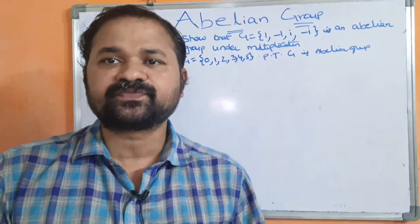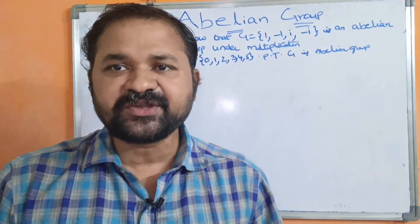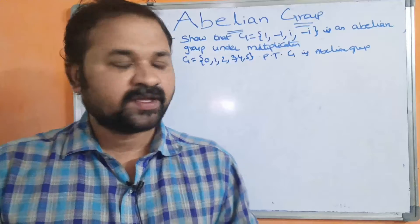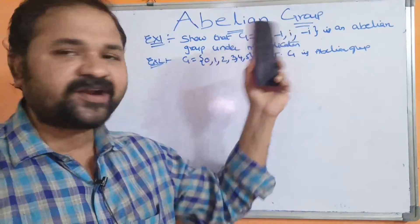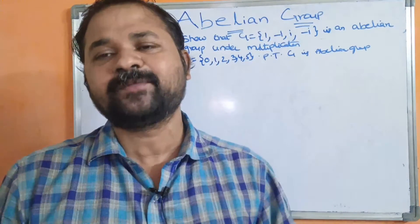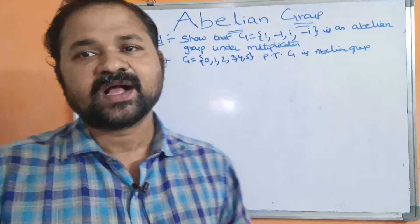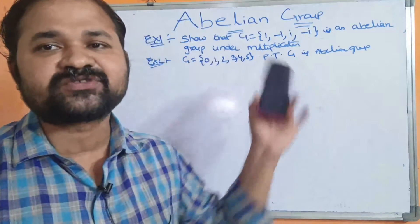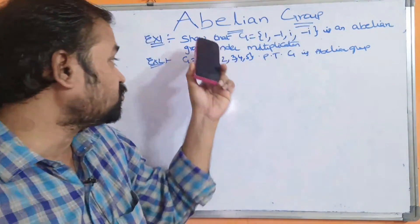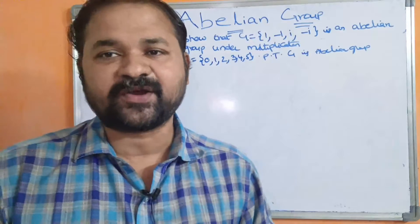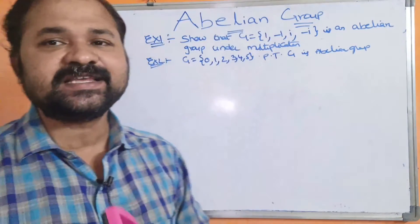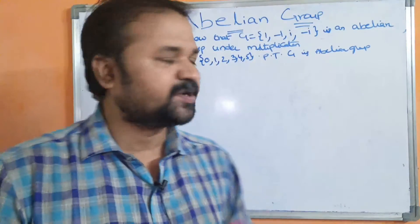In this video, we are going to discuss about abelian groups. We will discuss the properties of the abelian group and solve two examples to determine whether these two groups are abelian groups or not. First, let us see the properties of the abelian group.